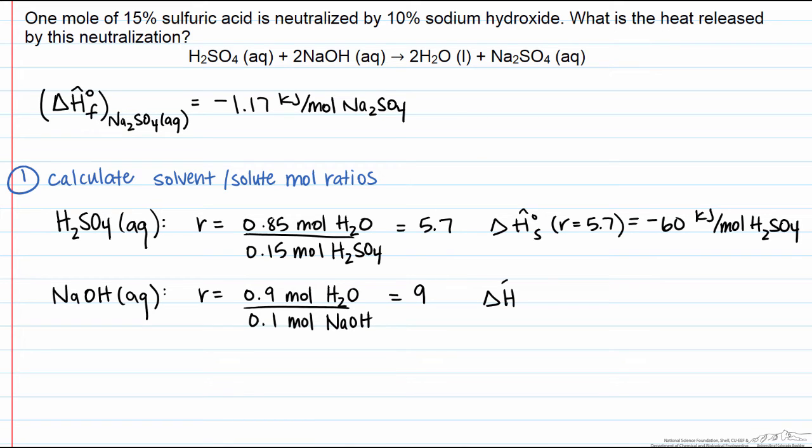Again, we look up this heat of solution for sodium hydroxide with an R of 9, and we find that it is minus 41 kilojoules per mole of sodium hydroxide.